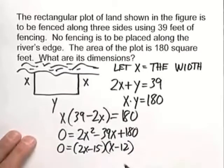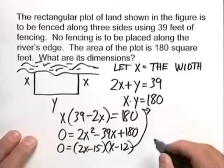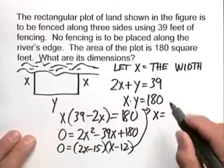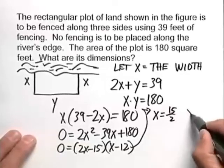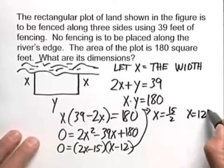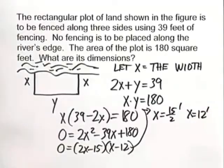And remember that x is our width. So one width will give us x being 15 halves, and the other one will be x equals 12. So our width in those two cases are 7.5 feet and 12 feet.